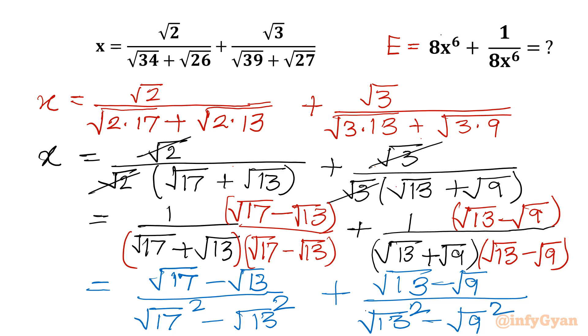The denominator becomes 17 − 13 and 13 − 9, and the numerator is (√17 − √13) and (√13 − √9).